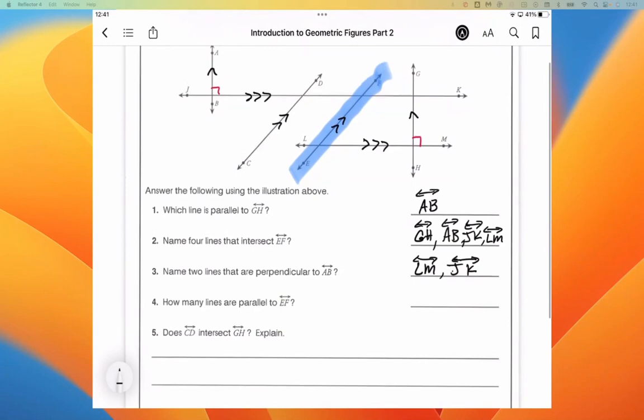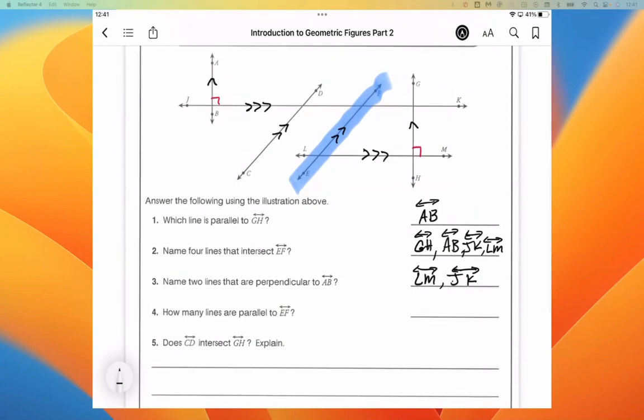How many lines are parallel to EF? Well, we have, where is EF? We have one line that is parallel to EF. And it is line CD.